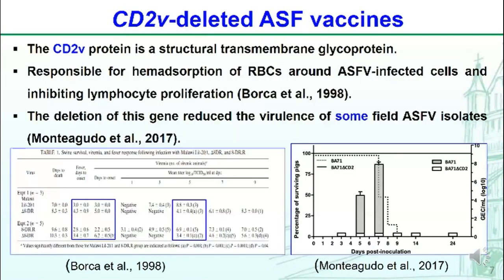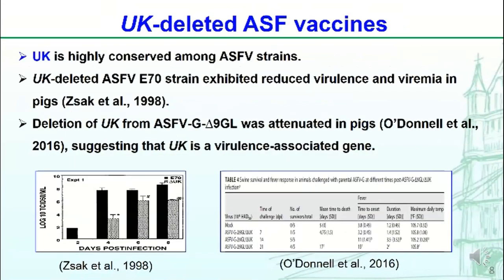The CD2V protein is a structural transmembrane glycoprotein. It is responsible for hemadsorption of red blood cells around ASFV-infected cells and inhibiting lymphocyte proliferation. The deletion of this gene reduces the virulence of some strains, but some strains cannot be attenuated by the deletion of this gene. The UK gene is highly conserved among different strains. It has been shown that UK gene-deleted virus showed reduced virulence and viremia in pigs, suggesting the UK gene is a virulence-associated gene.